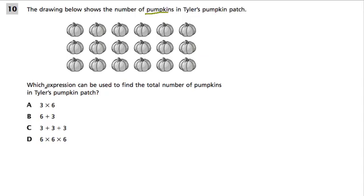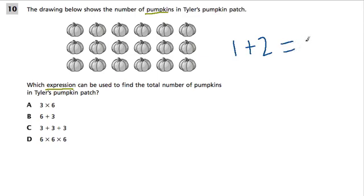Don't be scared by this question. It says expression. An expression is something in math like 3 plus 3 or 2 plus 5. It's just a way of combining numbers and operations like plus, minus, subtract, divide with numbers like 1, 2, and 3. But an expression doesn't have an equal sign. So 1 plus 2 is an expression, but 1 plus 2 equals 3 is called an equation. They don't want to know how many pumpkins there are — they want to know how you would find the answer.